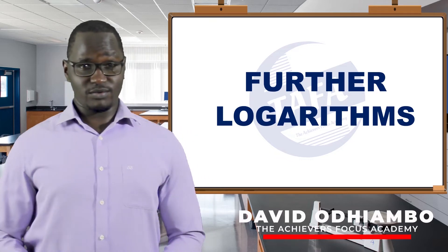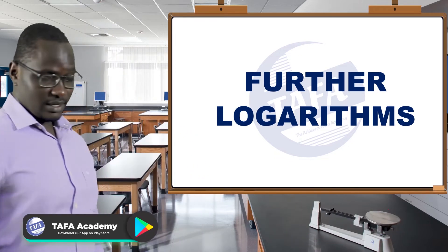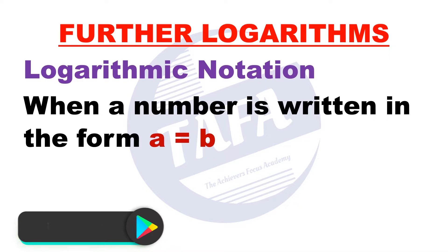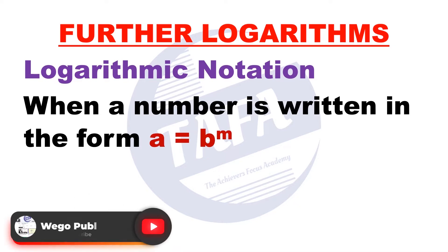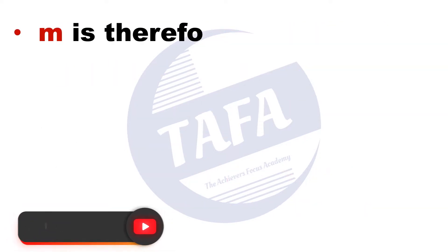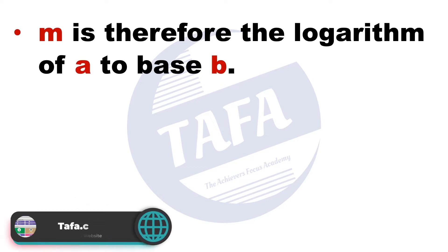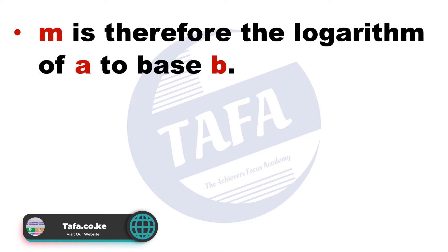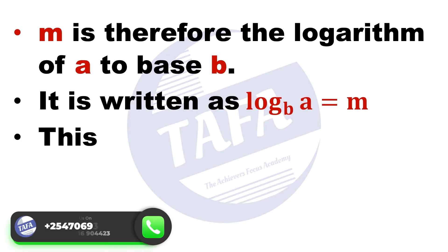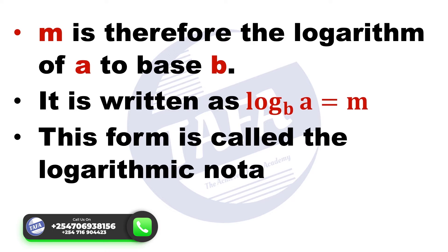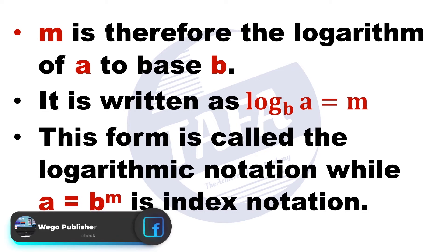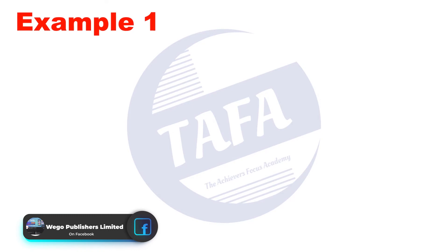This topic is further logarithms, and we are going to start with logarithmic notation. When a number is written in the form a equals b to the power m, b is called the base while m is called the power or index. m is therefore the logarithm of a to the base b, written as log base b of a equals m. This form is called the logarithmic notation, while a equals b to the power m is the index notation.